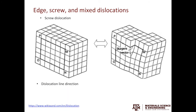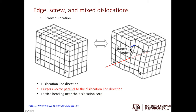The second type is the screw dislocation. The figure on the left shows a perfect crystal; the one on the right shows a screw dislocation, with the dislocation line direction indicated. In a screw dislocation, the Burgers vector is parallel to the dislocation line direction. Again, you see lattice bending near the dislocation core, indicating elastic strain stored there. When the dislocation line moves, it moves up and down, essentially zipping or unzipping the crystal, so the movement direction is perpendicular to the Burgers vector.